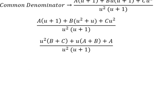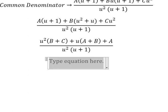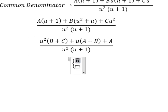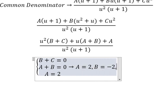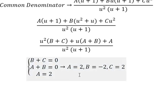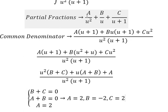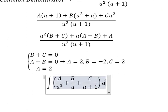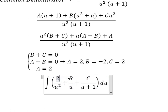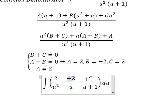Now we create the system of equations and find the solutions: A equals two, B equals negative two, and C equals two. We then substitute A, B, and C back into the partial fractions expression.